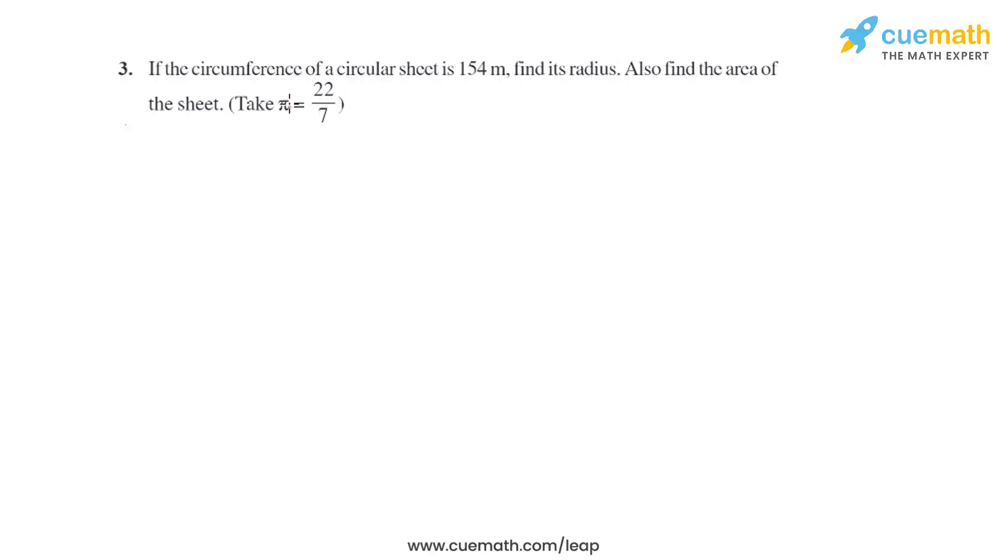Question 3 of this exercise says: if the circumference of a circular sheet is 154 meters, find its radius. Also find the area of the sheet. So in this question, basically we have to find the radius when the circumference is given, and after finding the radius, we have to find the area of the sheet.